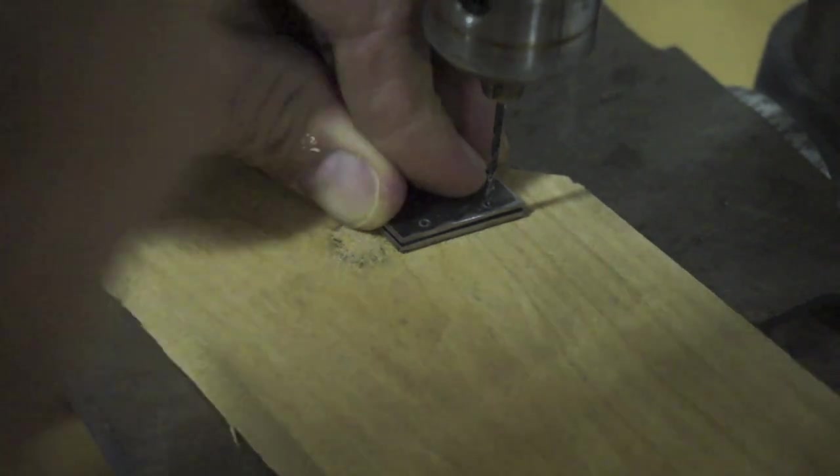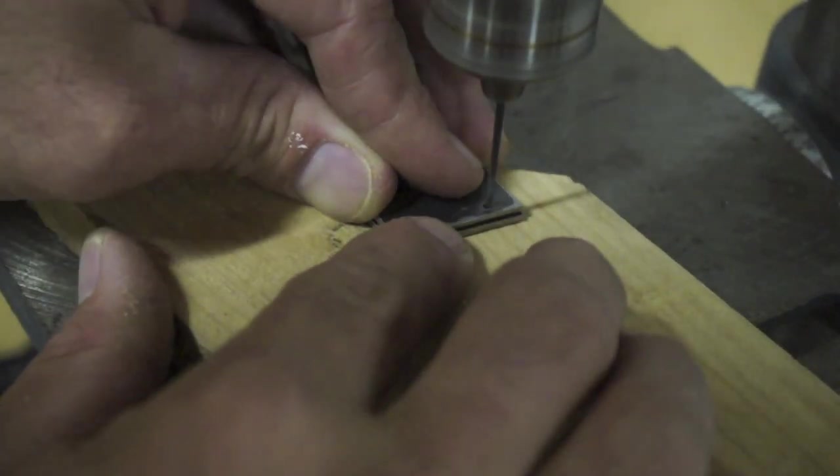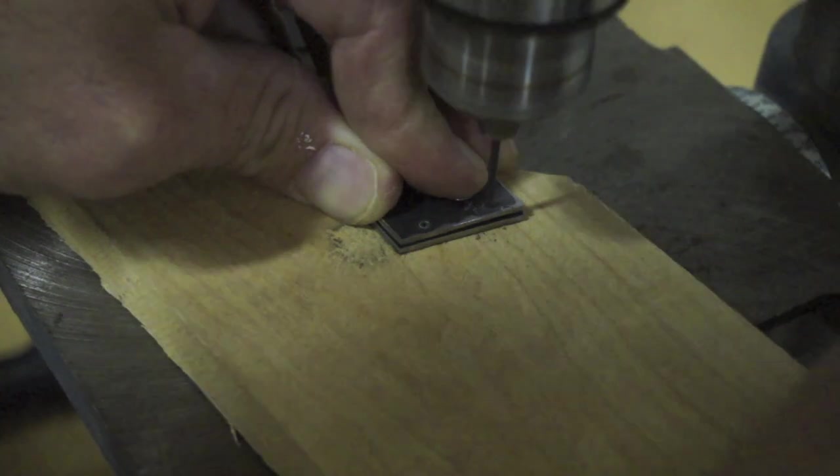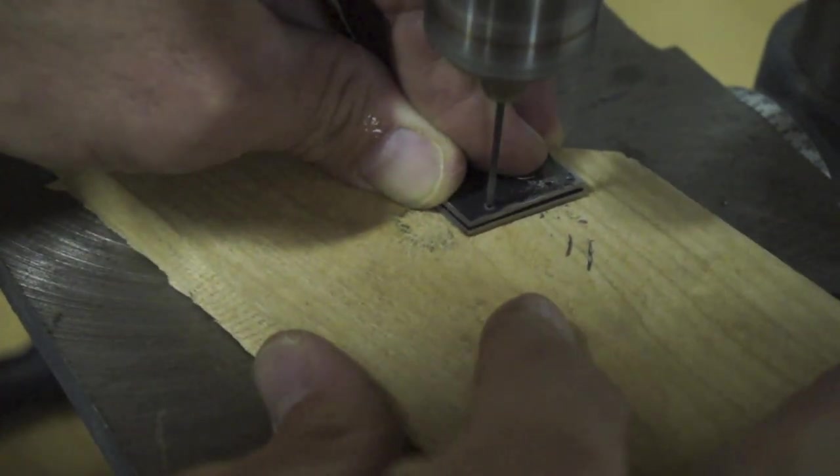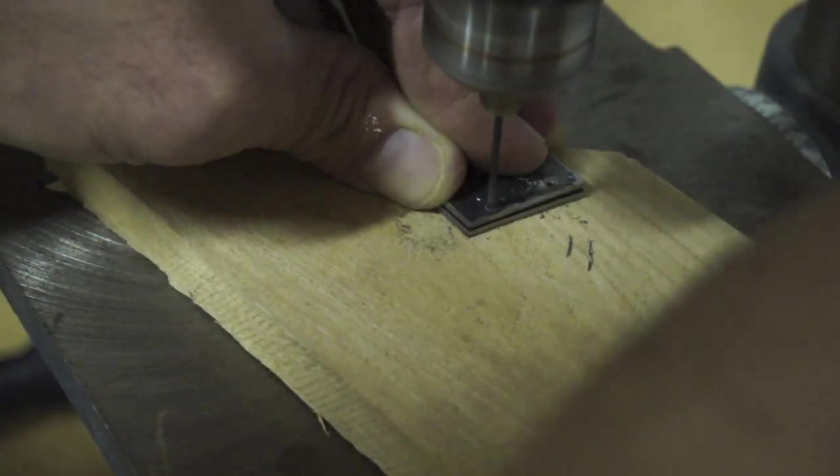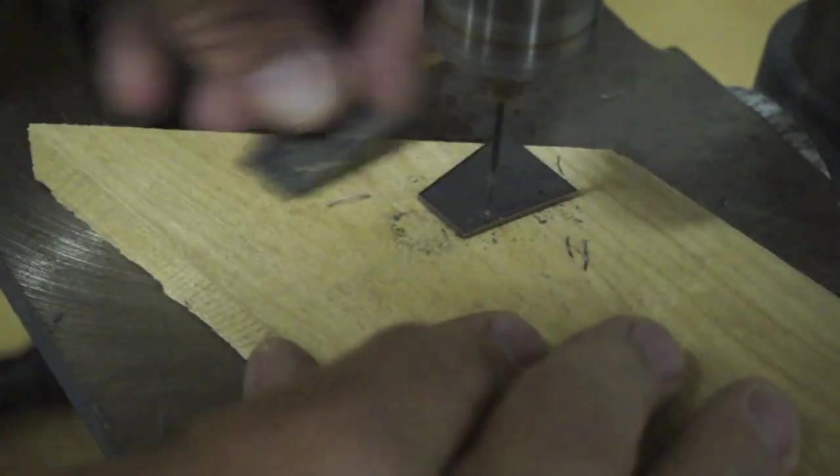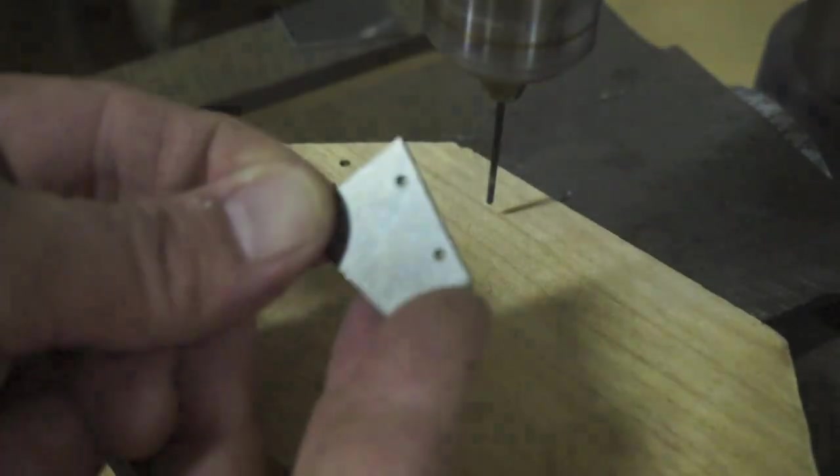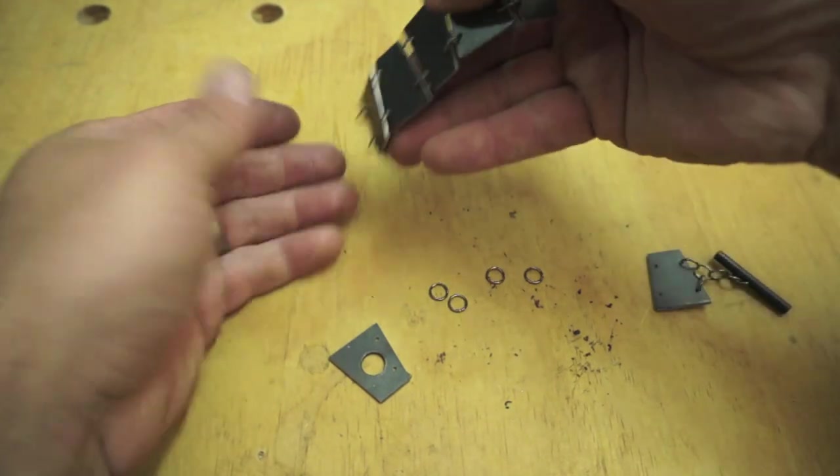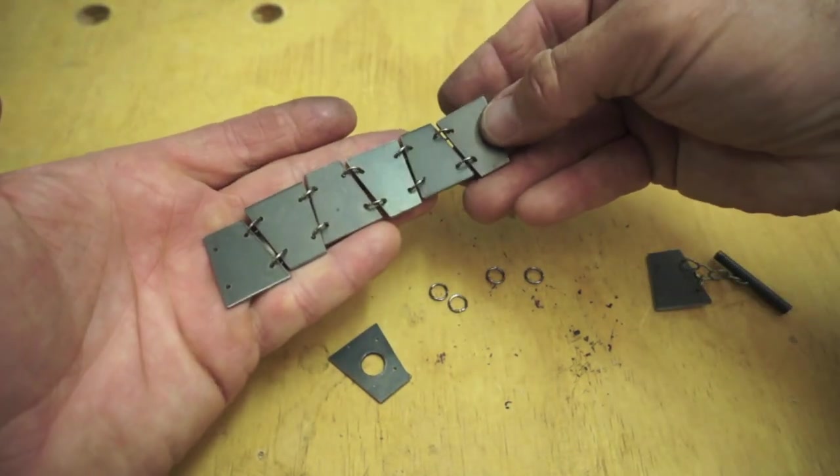So we'll line these up and just punch them through. Okay, well I pretty much got the bracelet assembled now. This is the main body of it, and all I need to do is connect these two end pieces.